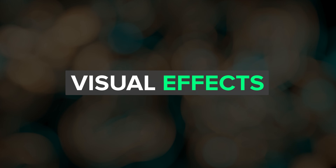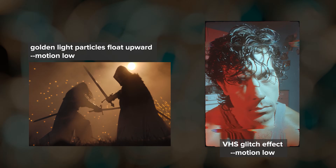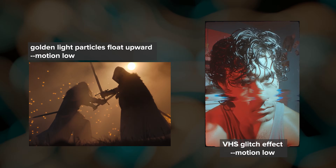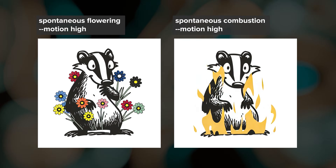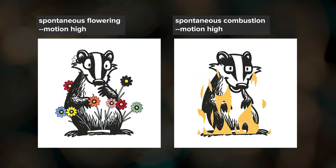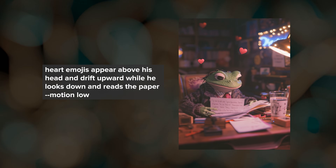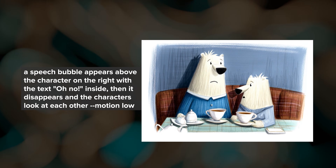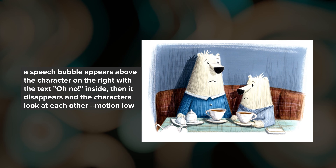For fun, try some visual effects. Add particle effects with phrases like 'golden light particles float upward,' or maybe a glitchy VHS effect. You don't really have to say anything about the scene itself — you can just type in the effect you want and see what happens. Here I tried 'spontaneous flowering' and 'spontaneous combustion.' You can also add speech bubbles with text by prompting something like 'a speech bubble appears above their head' with the particular word or phrase in quotes that you want to appear in the bubble.